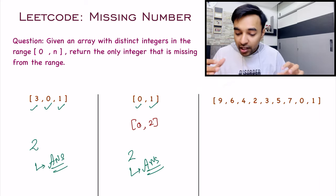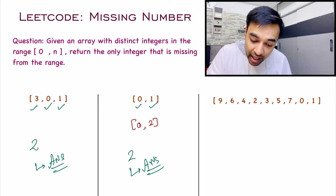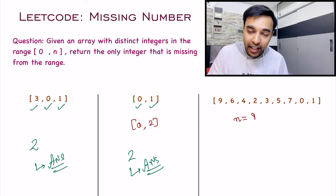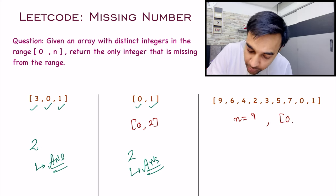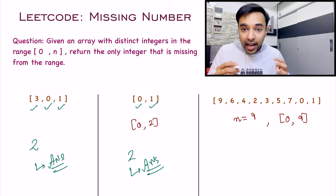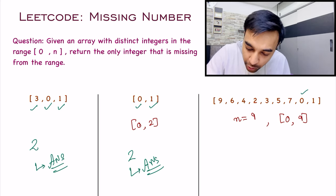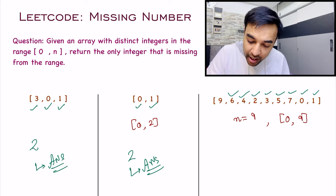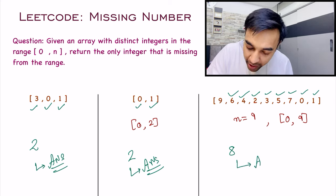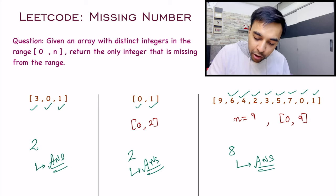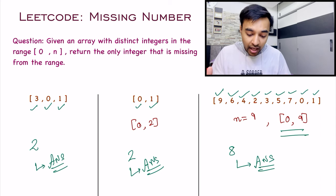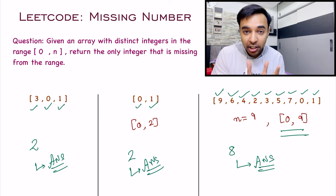Now let us look at our final test case. You can see that this array has 9 elements, so the value of n equals 9, and hence you are expecting elements from 0 all the way up to 9. If you try to find the missing element, you can see that 0, 1, 2, 3, 4, 5, 6, 7 are there, but you cannot find an 8. So in your last test case, 8 will be your answer because you can find 9, and this completes your entire range 0 to 9.